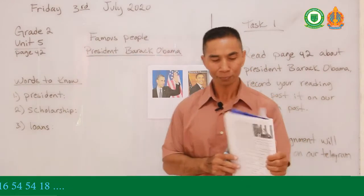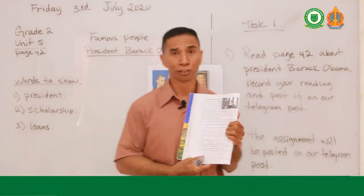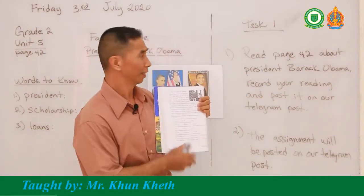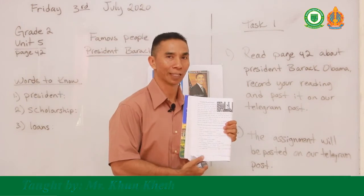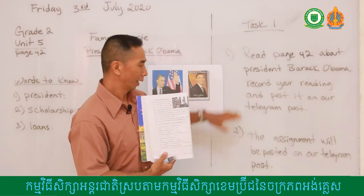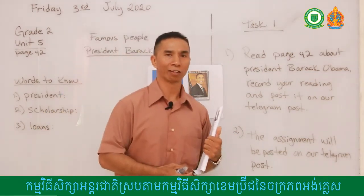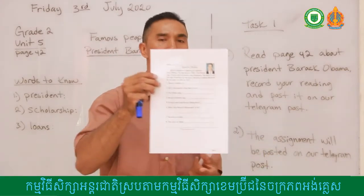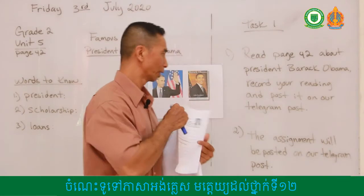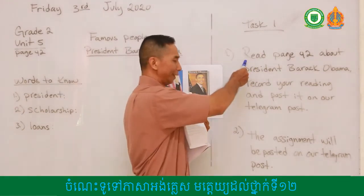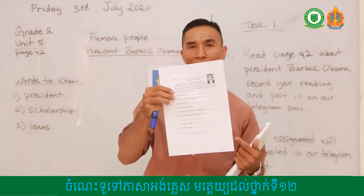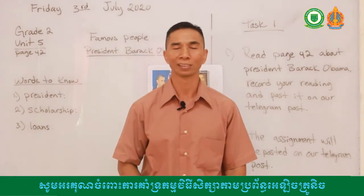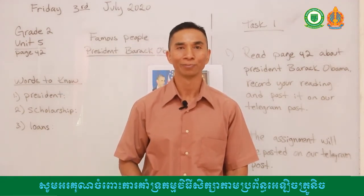After our work here, I want you to do the first task for today's lesson. Task one: read page 42 and record your voice and post it on our Telegram post. Task two: I will post the assignment on our Telegram post and you will have to answer some questions. You will have 40 minutes to complete task one — your reading and your assignments. Once you complete them, send the assignment to my personal Telegram so I can correct it and give you back your score. Until we see each other again on our next video, please send in your work.